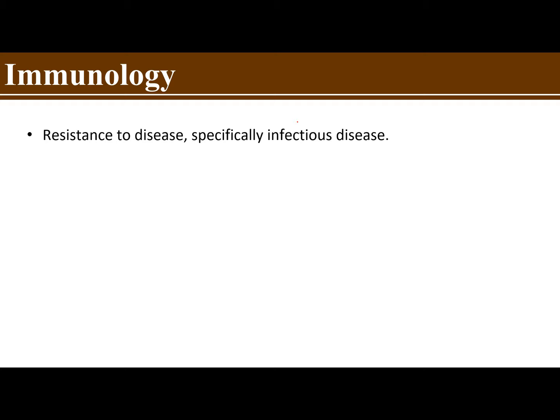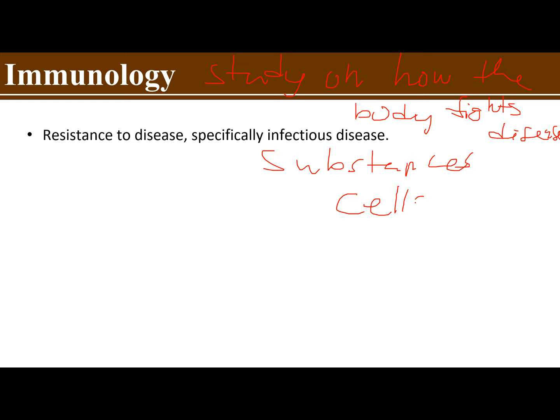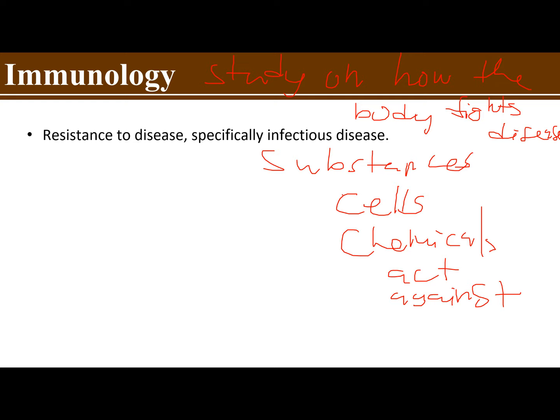Immunology would refer to the resistance to disease, specifically infectious disease. If we simplify this, immunology would refer to the study of how the body fights disease. When you have a bacterial infection, viral infection, or fungal infection, what are the different substances, cells, and chemicals that would act against these foreign substances?